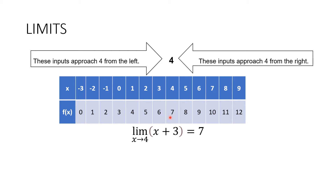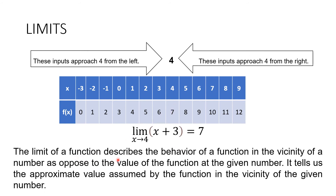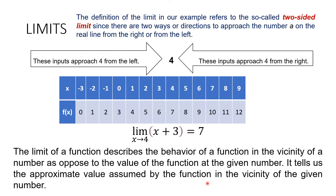Same goes coming from the right side — the value of our f of x, 12, 11, 10, 9, 8, is also approaching the value of 7 as our x approaches 4. The limit of a function describes the behavior of a function in the vicinity of a number, as opposed to the value of the function at the given number. It tells us the approximate value assumed by the function near the given number. Therefore, we can say that this is the so-called two-sided limit, since there are two directions to approach the number a on the real line — from the right or from the left.